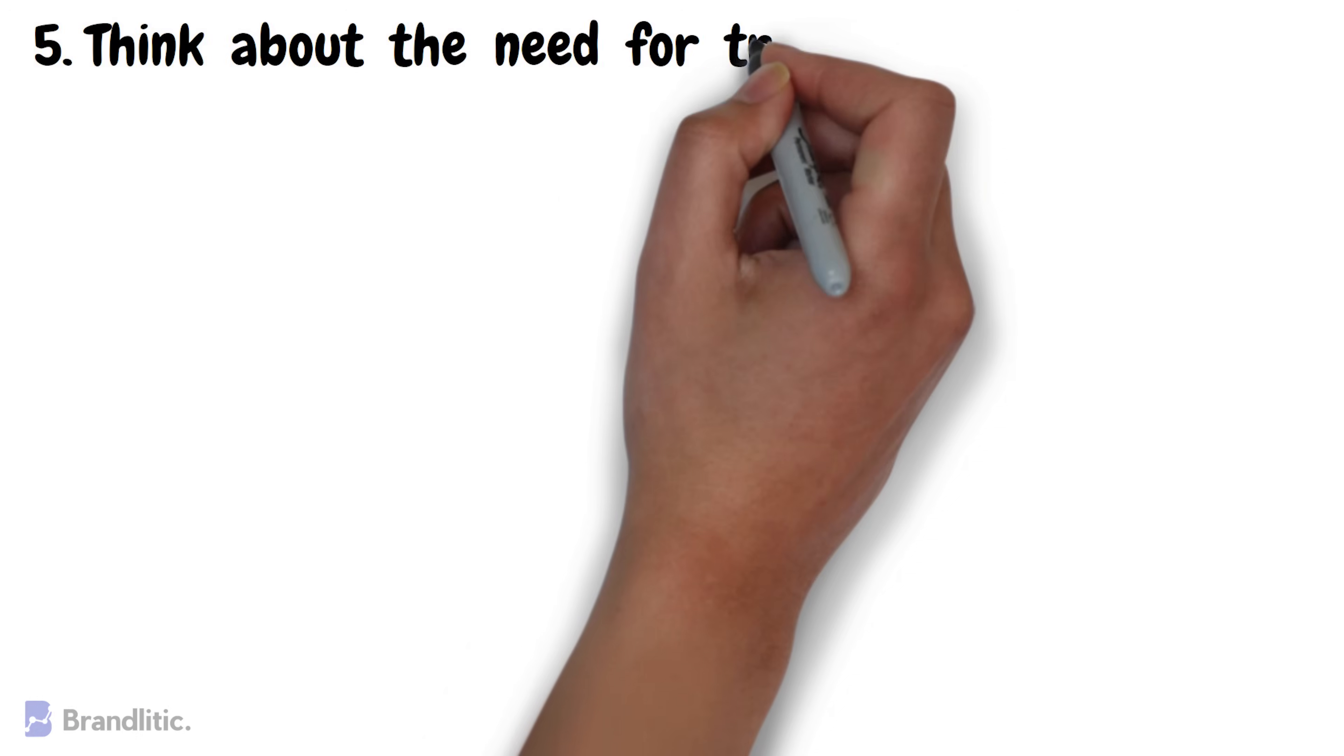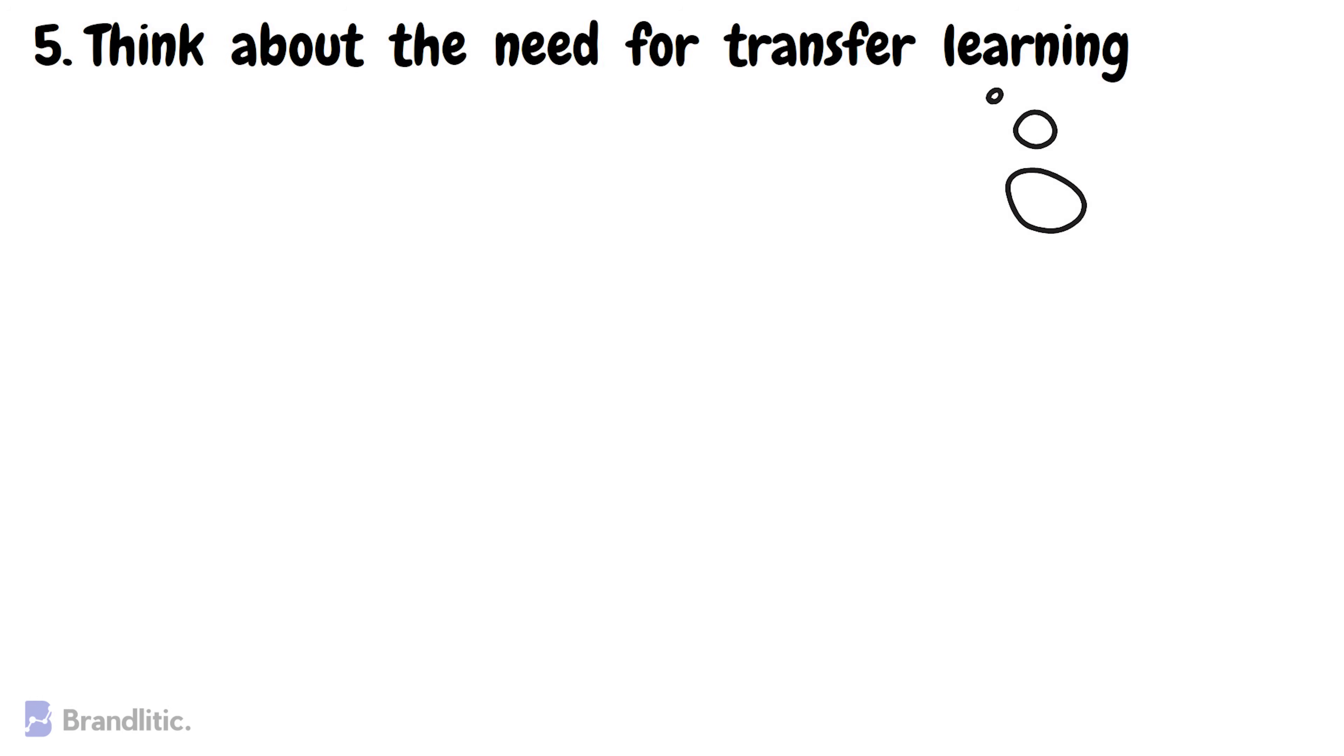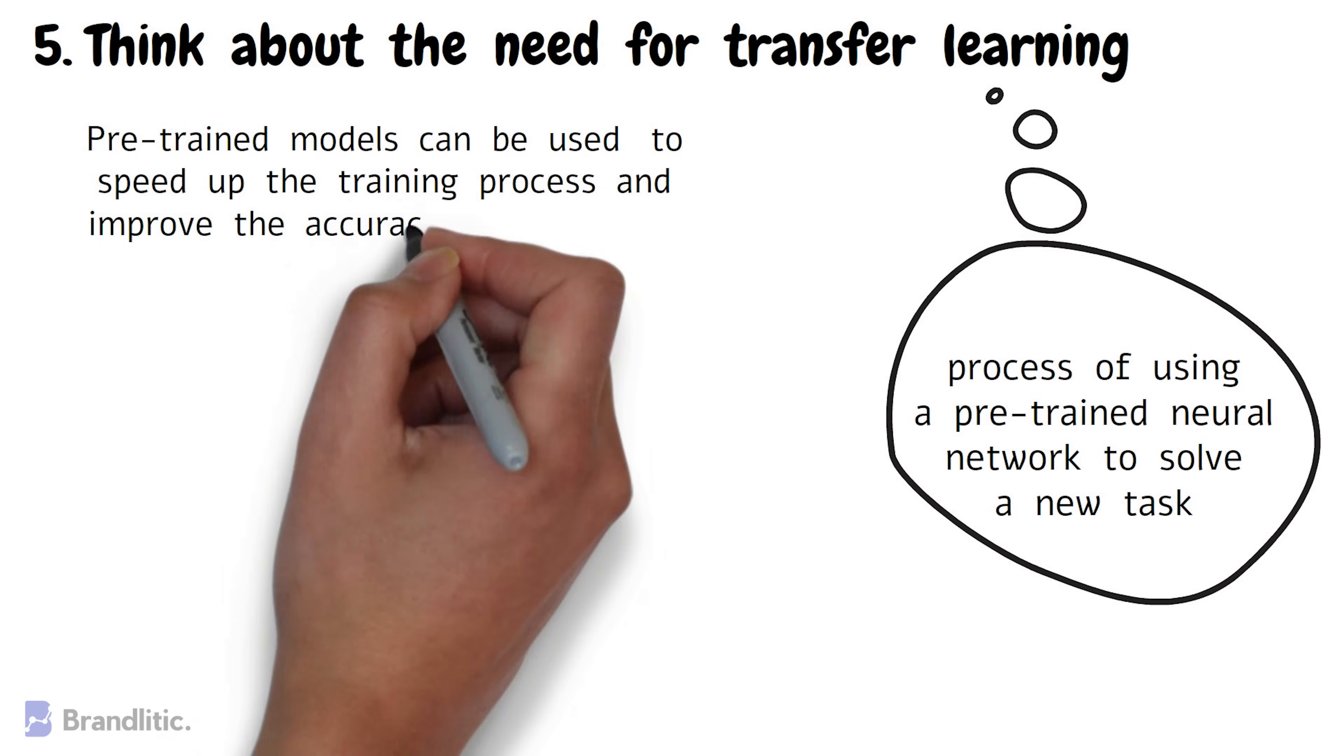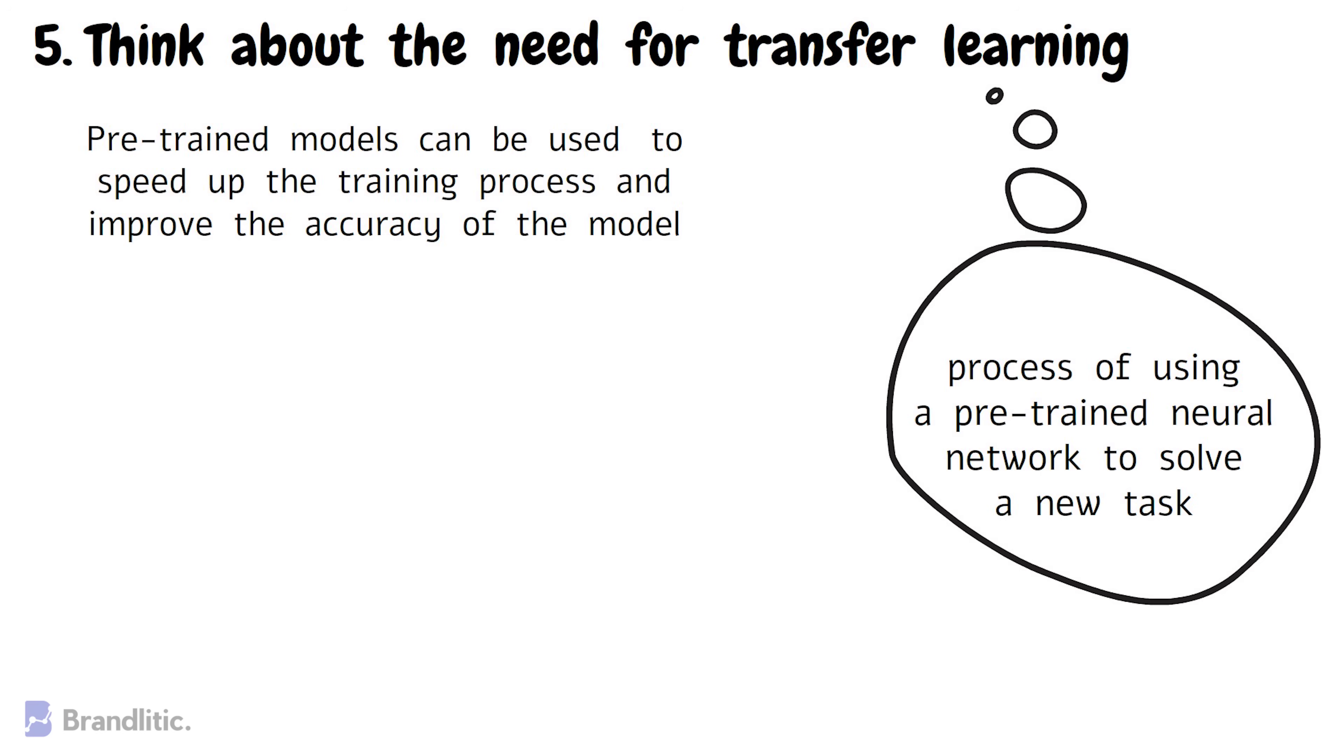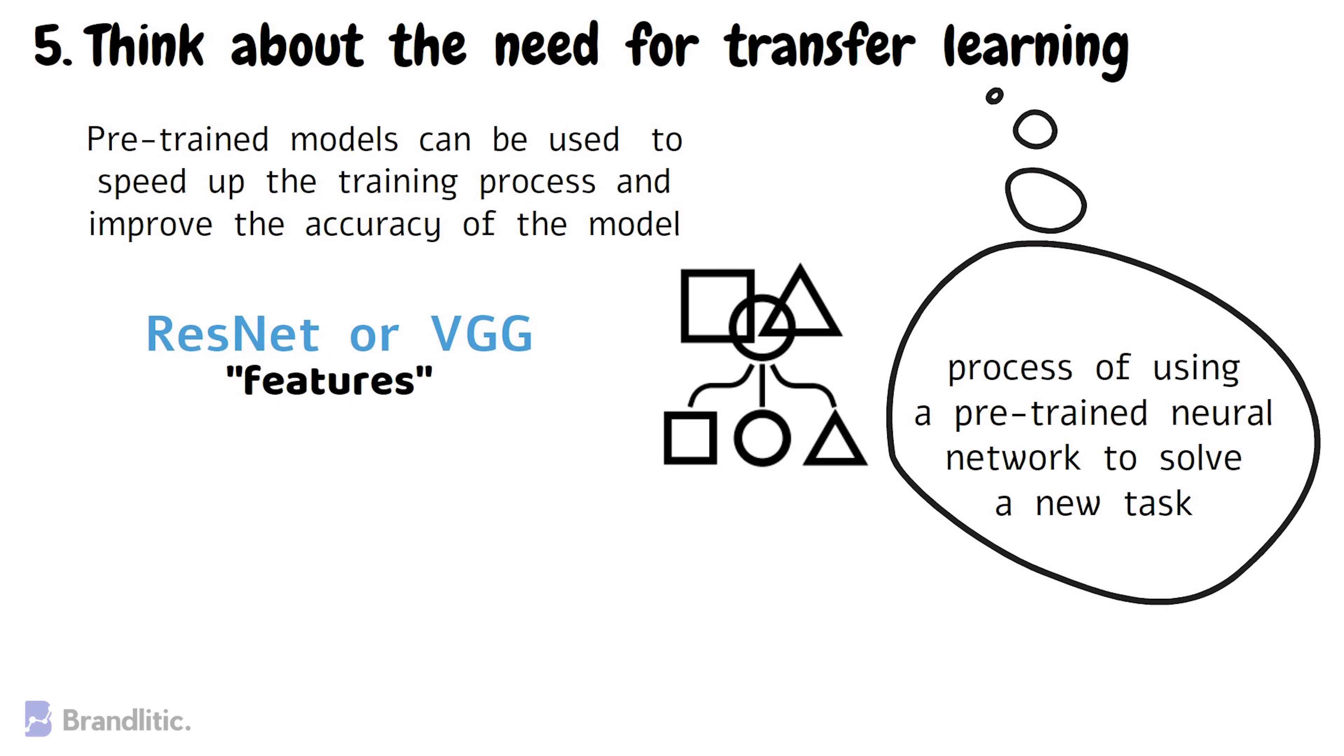Number five, think about the need for transfer learning. Transfer learning is the process of using pre-trained neural networks to solve a new task. Pre-trained models can be used to speed up the training process and improve the accuracy of the model. For example, if you're working on an image classification task, you can use a pre-trained CNN like ResNet or VGG to extract features from the images. You can then use these features as input to a new neural network that is specifically designed for your task.